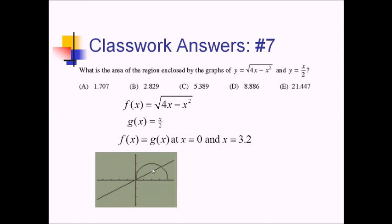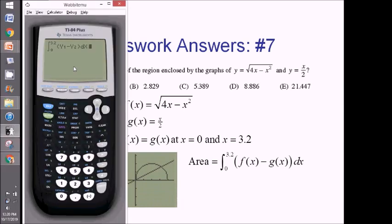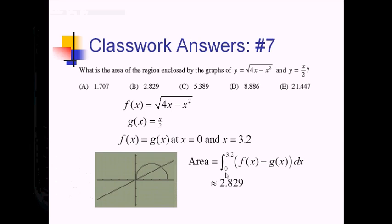To find this area, we do top minus bottom from 0 to 3.2. The integral runs from 0 to 3.2 with f of x — the semi-oval — as the top function and the line g of x as the bottom. So the integrand is f of x minus g of x dx. On the calculator, with f in y1 and g in y2, this evaluates to 2.829, which gives us choice B.